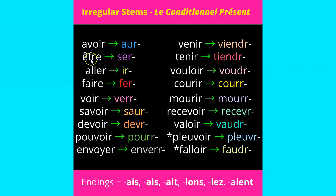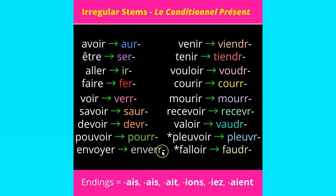Let's look at the verb aller, which means 'to go.' You take aller's irregular stem, which is ir-, and then add the conditional endings depending on the subject: j'irais, tu irais, il/elle/on irait, nous irions, vous iriez, and ils/elles iraient. It's the exact same process with all other irregular verbs in le conditionnel présent.